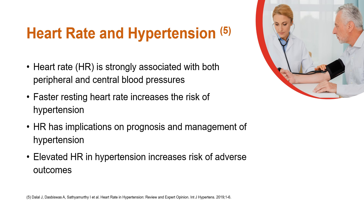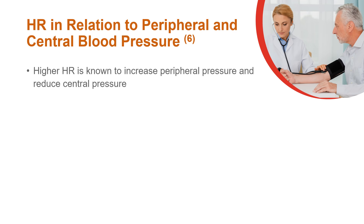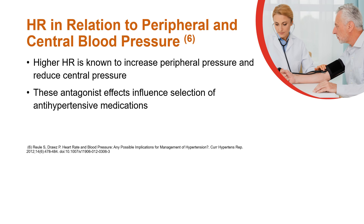Heart rate is strongly associated with both peripheral and central blood pressures. A faster resting heart rate increases the risk of hypertension, and heart rate has implications on the prognosis and management of hypertension. Elevated heart rate in hypertension increases the risk of adverse outcomes. Higher heart rate is known to increase peripheral pressure and reduce central pressure.